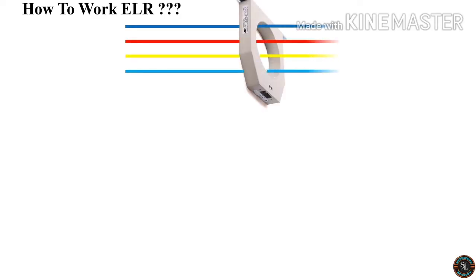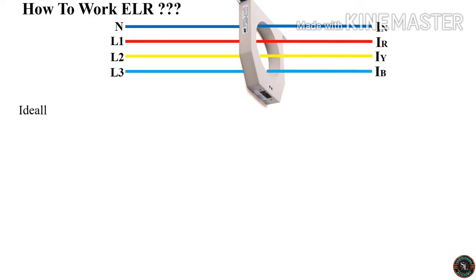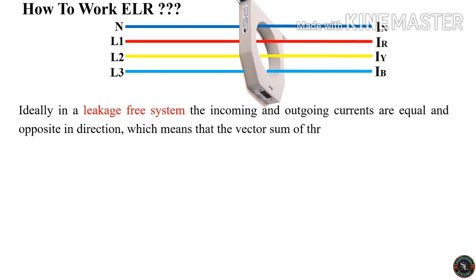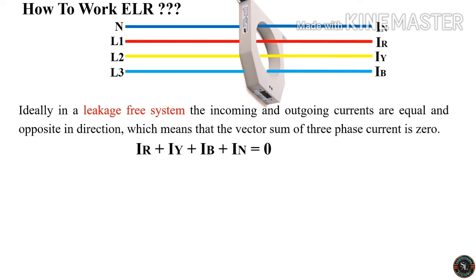Now let's explain the working procedure of ELR. Here, IN is the neutral line current, IR is Line 1 current, IY is Line 2 current, and IB is Line 3 current. Ideally, in a leakage-free system, the incoming and outgoing currents are equal and opposite in direction, which means the vector sum of the three phase currents is zero. For this we can write the equation: IR + IY + IB + IN = 0.